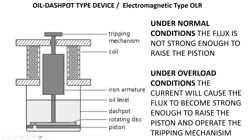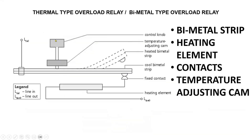Here we have the oil dashpot type device, also known as an electromagnetic type overload relay. Under normal conditions, the flux in the coils is not strong enough for the piston to overcome the oil. However, under overload conditions, the current is strong enough and the magnetic flux will cause the tripping mechanism to trip. For the thermal type overload relay, also known as the bimetallic type overload relay, it has four main parts: the bimetallic strip, a heating element, contacts, and an adjusting cam.